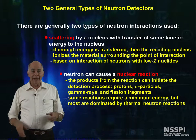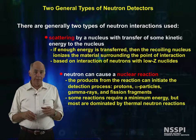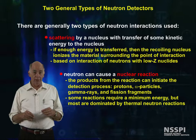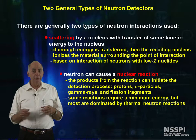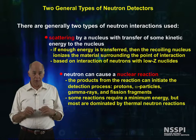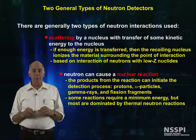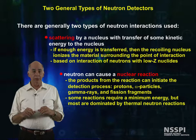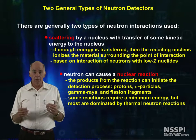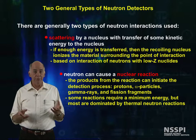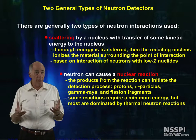The second type of nuclear reaction that we can use to detect neutrons is absorption reactions that produce charged particles. These charged particles can be protons, alpha particles, gamma rays, or fission fragments, among others.